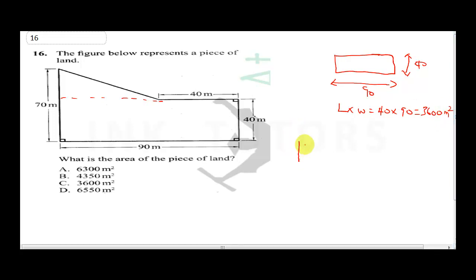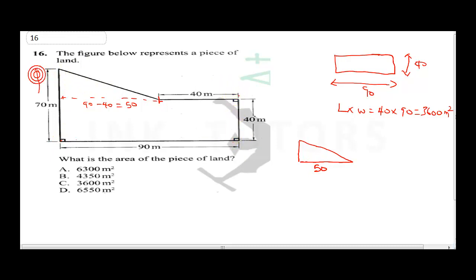Then we bring up our triangle. Notice from here to here is 40, and from here to here is 90. To get the base of the triangle, it's 90 minus 40, which gives us 50. So the base here is 50. And from here to here is 70, and the height of the rectangle side is 40, so the triangle height is 70 minus 40, which gives us 30.